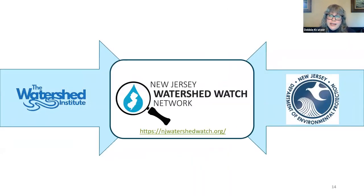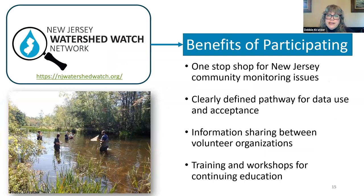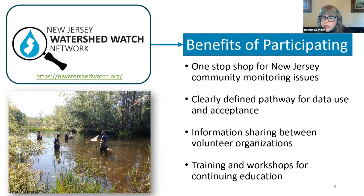We awarded a grant to the Watershed Institute to manage the New Jersey Watershed Watch Network — the website is njwatershedwatch.org. That's our umbrella for coordinating our community water monitoring program. The benefits to a group participating in the Watershed Watch Network include a one-stop shop for New Jersey community water monitoring issues, clearly defined pathways for learning about and accepting data, and information sharing for workshops like tonight.